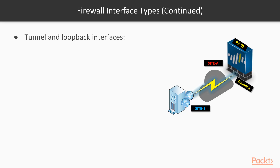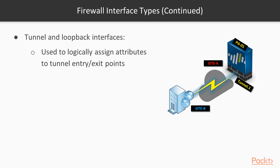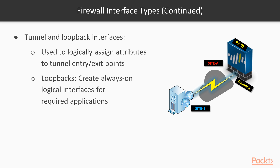With tunnel and loopback interfaces: tunnel interfaces are logical interfaces used for IPsec tunnels. Your virtual router can route traffic toward a tunnel interface to reach a remote network. A loopback interface has a persistent IP address that is always up — useful for monitoring, traffic redirection, or assigning a router process ID for routing protocols like OSPF or BGP.